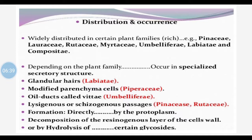Labiatae and Compositae families we are going to cover later on. Depending upon the plant family, terpenoids occur in specialized secretory structures — a criteria we have seen in case of volatile oils also. For example, glandular hairs in the Labiatae family: the volatile oil or terpenoids are present mainly in the glandular hairs. Similarly, in Piperaceae family, like black pepper, the modified parenchyma cells are the specialized structure where terpenoids can be present.